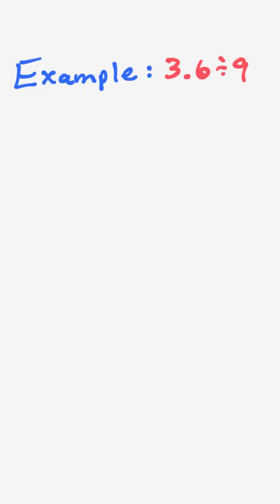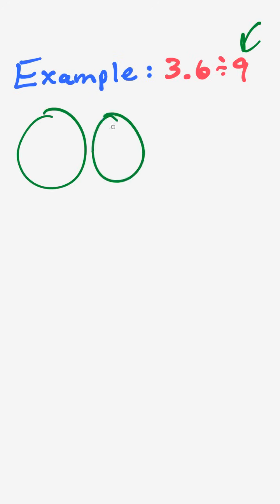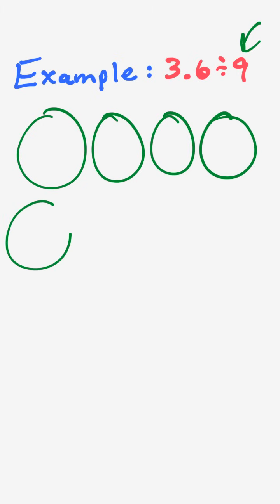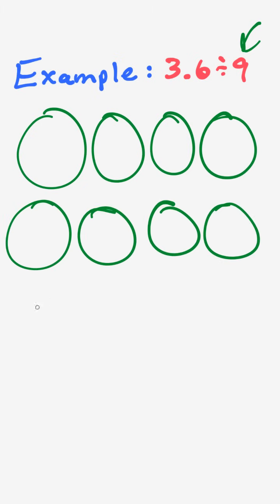Here's my final example. We have three and six tenths divided by nine. So draw our groups — I have nine of them: one through nine. I notice a problem before I even begin: I'm not going to have enough wholes, and I'm not going to have enough tenths to distribute amongst the nine groups. Sometimes this happens and we have to do a lot of drawing, but it really isn't that bad, so let's get to it.